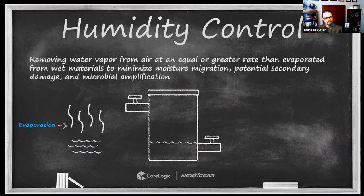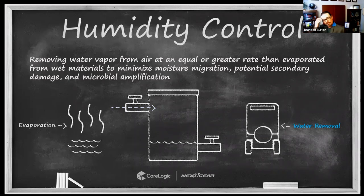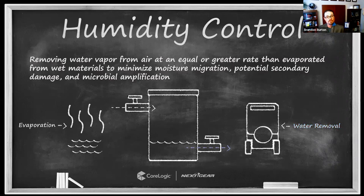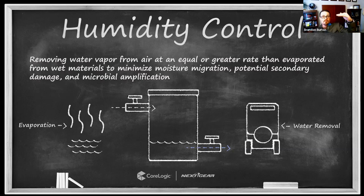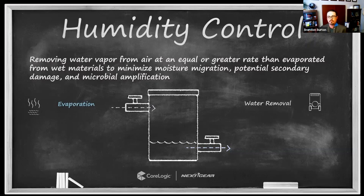On the other end, we've got humidity that we would be removing — dehumidification, ventilation. The rate or difference between these two determines what the water level does. The amount flowing in versus the amount flowing out dictates whether that water level increases, stays the same, or decreases over time. If evaporation is winning, humidity will continue to increase.